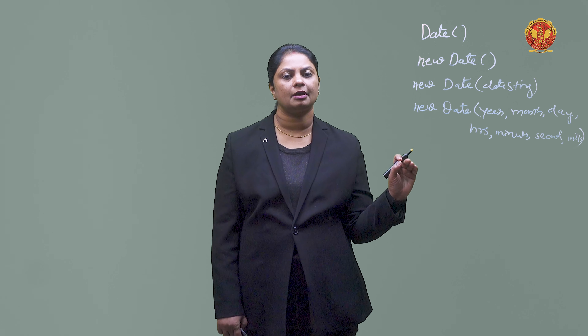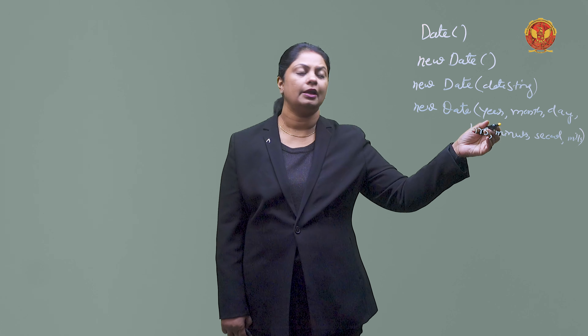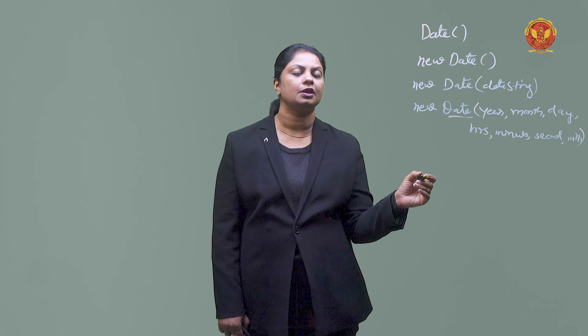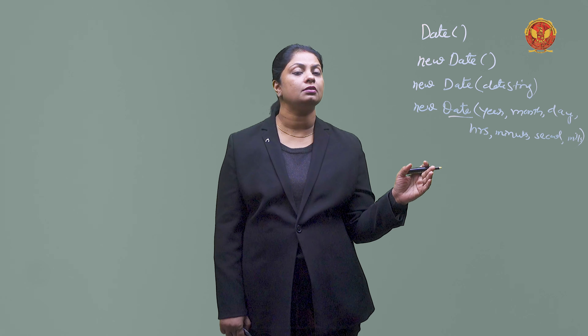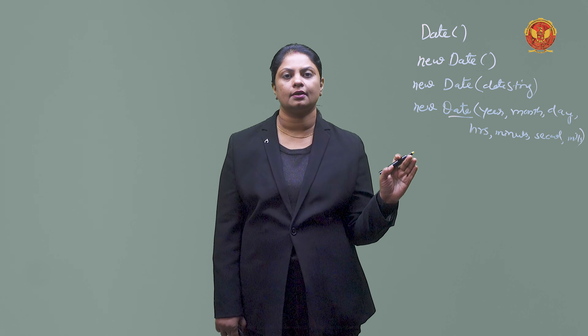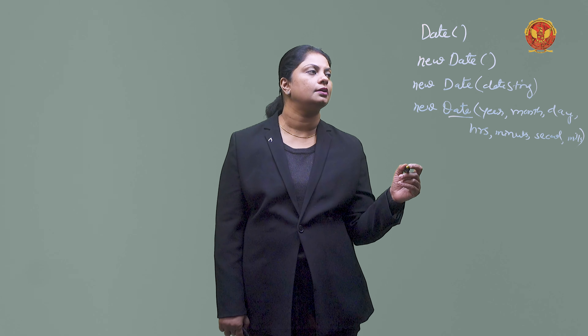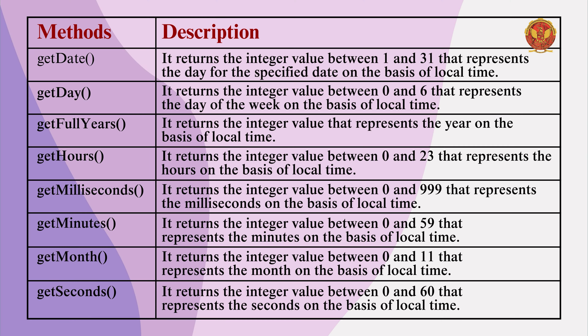It is not necessary that you pass all the parameters. Based on the value you pass to your date constructor, it will return the value. Now we can see the date object's different methods, which you can see in the table. The first method is getDate. The getDate method returns an integer value which will represent your date based on the local time.